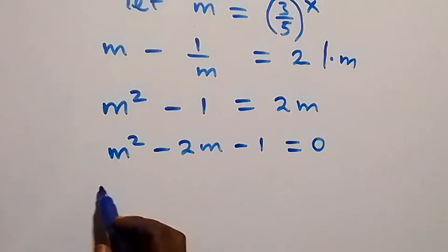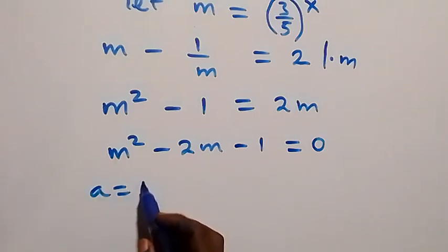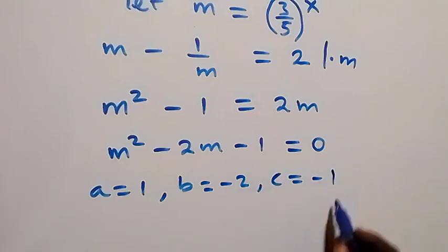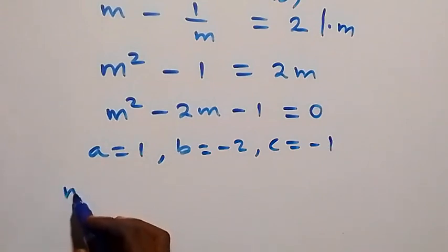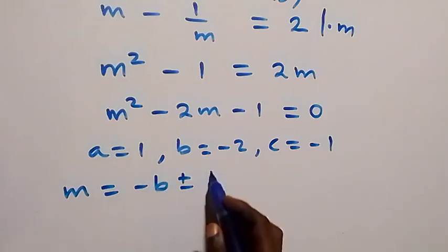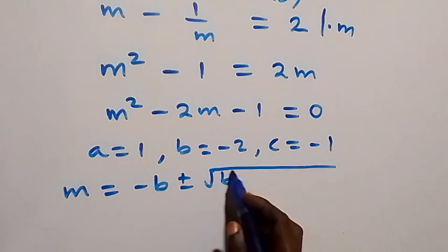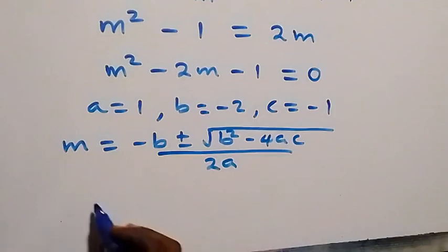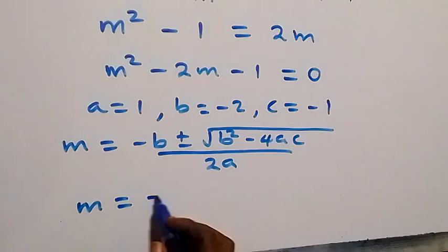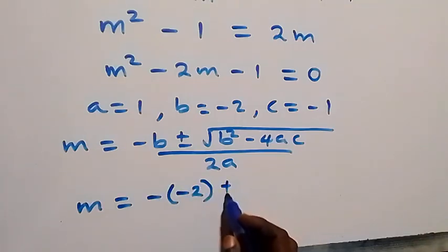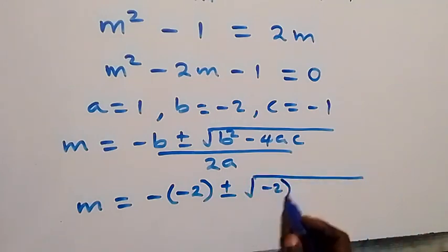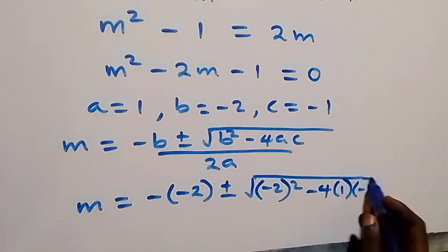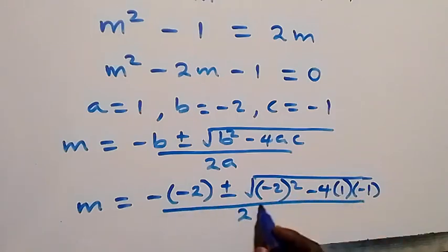We have a quadratic equation where a equals 1, b equals minus 2, and c equals minus 1. From the quadratic formula: m equals minus b plus or minus square root of b squared minus 4ac, over 2a. Substituting: m equals minus(minus 2) plus or minus square root of (minus 2) squared minus 4 times 1 times (minus 1), over 2 times 1.